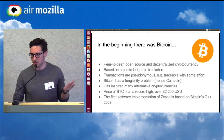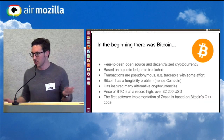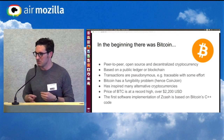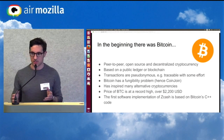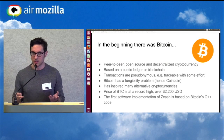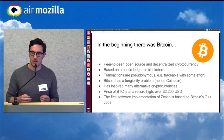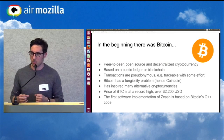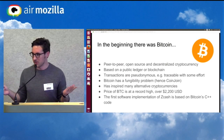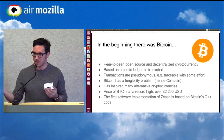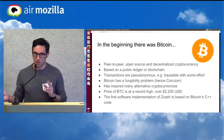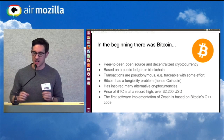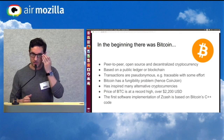Obviously, in the beginning, there was Bitcoin — probably needs no explainer. Peer-to-peer, open source, decentralized cryptocurrency based on a public ledger or blockchain where everything's public. You can see the activity of how money is changing hands. So transactions are not truly anonymous — they're pseudonymous.